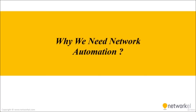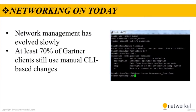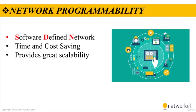In this section we will talk about why we need network automation. Even as underlying technologies have evolved, network management has remained largely the same for decades. Networks are typically built, operated, and maintained manually. Network operators log into routers, switches, load balancers, and firewalls and change configurations by hand. These procedures are largely directed at implementing and maintaining network policies defined by business processes. At least 70% of Gartner clients still use manual CLI-based changes as the primary mechanism for network configurations.